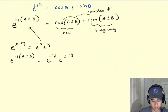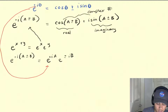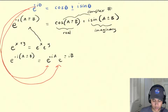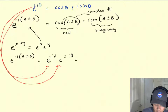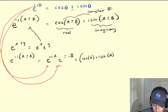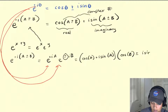Remember now that we can apply Euler's identity to each of these terms individually. When we do that, the first term gives us cosine of a plus i·sine of a, and the second term gives us cosine of b plus or minus i·sine of b.